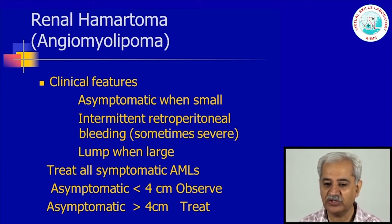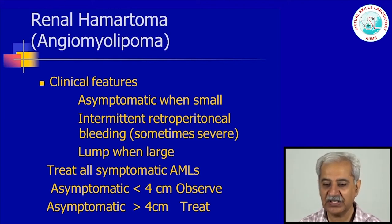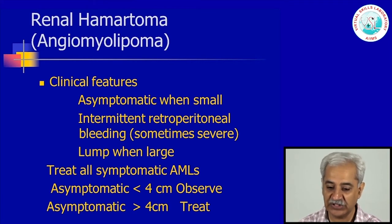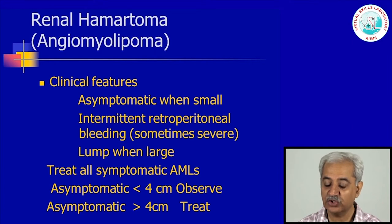Talking about the clinical features of angiomyolipoma: when they are small, they are asymptomatic. The problem is that sometimes they can lead to retroperitoneal bleeding, which can be severe. However, in renal angiomyolipomas that are small, the incidence of spontaneous retroperitoneal bleeding is low. Therefore, if the lesion is less than 4 centimetres, the guideline is that these lesions can be observed. If the lesions are more than 4 centimetres, then they should be treated. All symptomatic angiomyolipomas — whether causing pain or having bled — irrespective of size, should be treated.